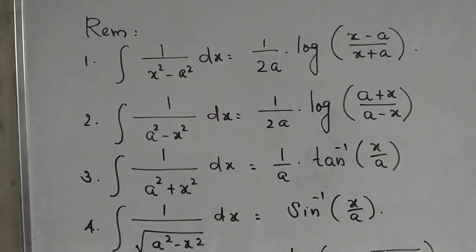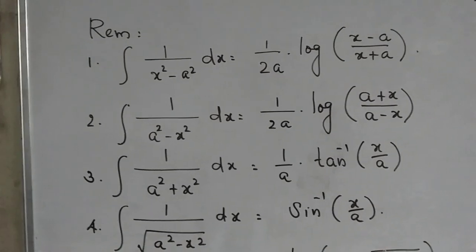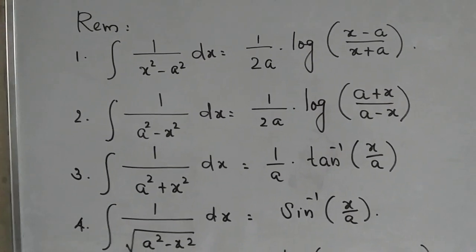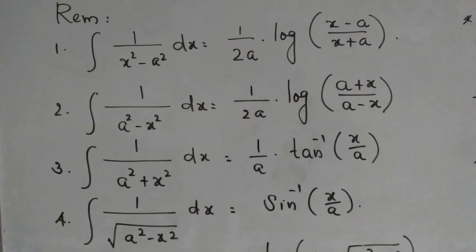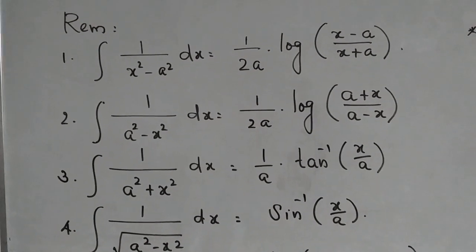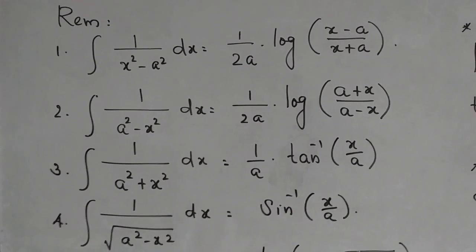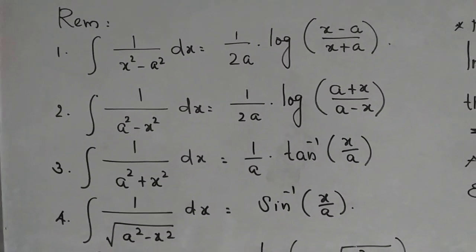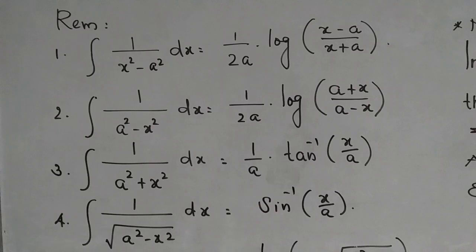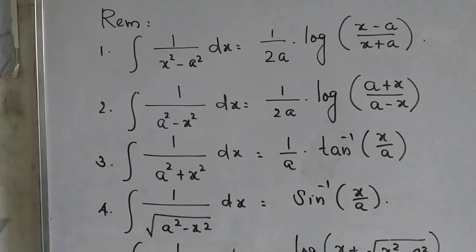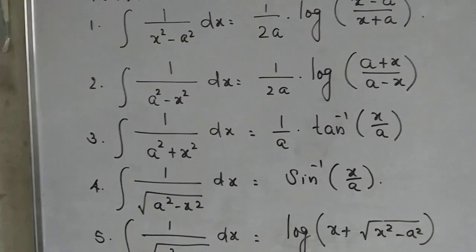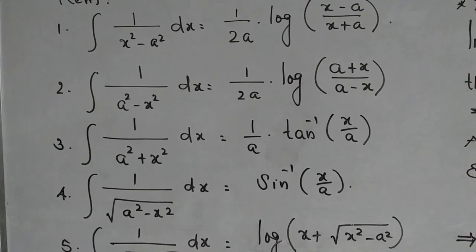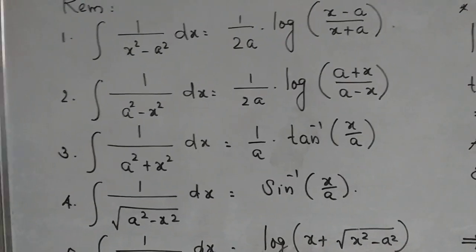We have learned six different relations yesterday. Let's go through them once again. Integral of 1 divided by x squared minus a squared dx becomes 1 upon 2a times log of (x minus a) divided by (x plus a). The second one: integral of 1 divided by a squared minus x squared dx becomes 1 divided by 2a times log of (a plus x) divided by (a minus x). The third one: integral of 1 divided by a squared plus x squared dx is equal to 1 upon a times tangent inverse of x divided by a.